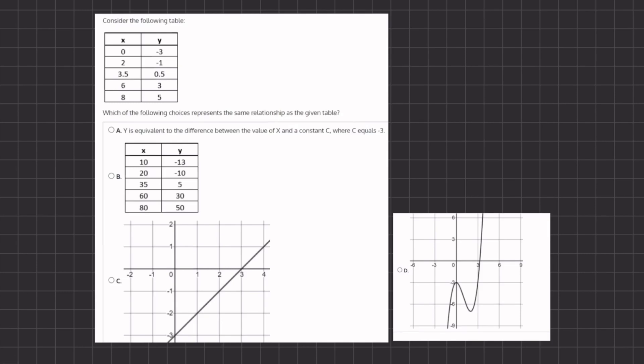Alright, so in this problem we are given a graph and we want to find which of the following choices represents the same relationship as the graph we are given. So let's take a look at our graph, I mean at our table, and see the relationship between x and y.